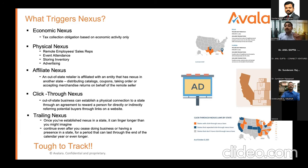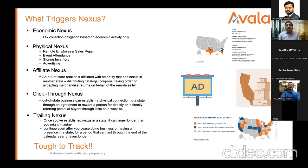Even your advertisement can trigger physical nexus. Paper ads, banner ads — all of these can force you to get a sales tax registration in that particular state. In this digital world, affiliates can also trigger nexus. If someone distributes a catalog or coupon on your behalf, takes an order on your behalf, or accepts merchandise returns, they are considered affiliates under the law, and you are triggering nexus and must register in that state.